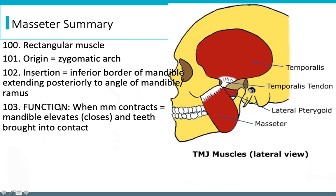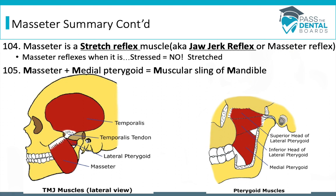The function of the masseter when the muscle contracts is to elevate the mandible — that's just a confusing, fancy way to say closing the mouth. So if the jaw elevates upward, the mouth is going to close and the teeth are going to be brought into contact. The masseter is a stretch reflex muscle, also known as a jaw jerk reflex or the masseter reflex.